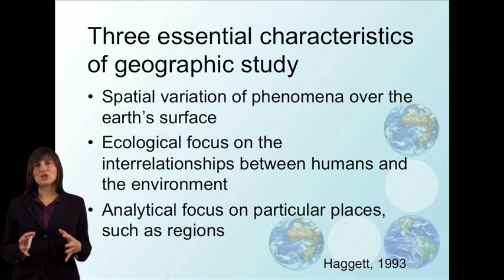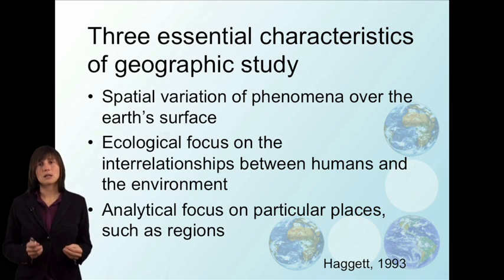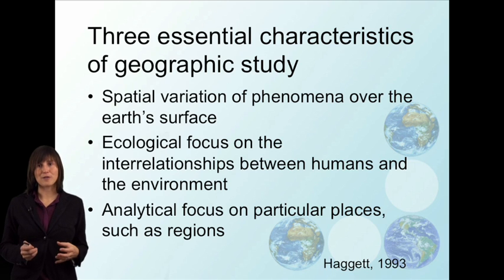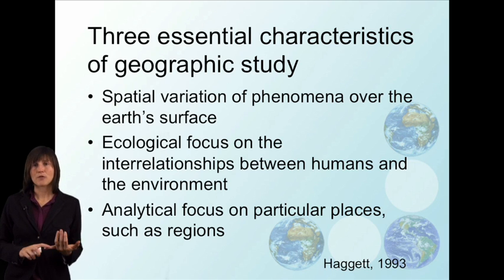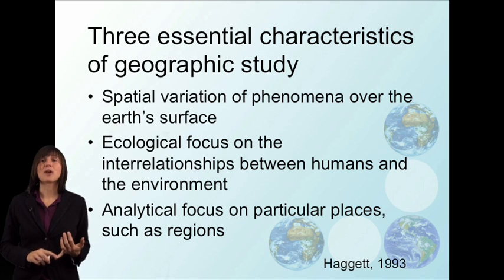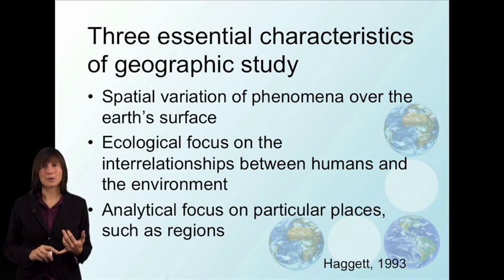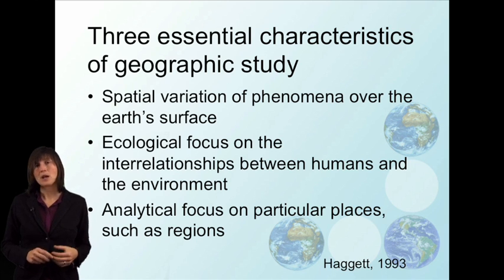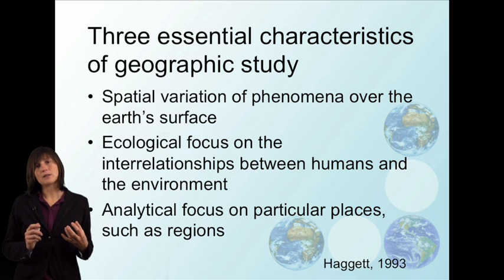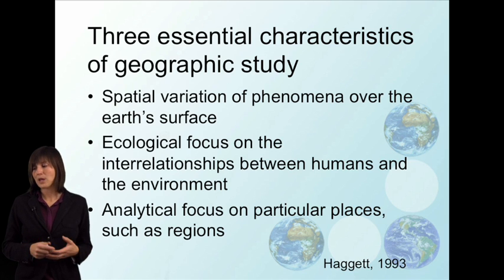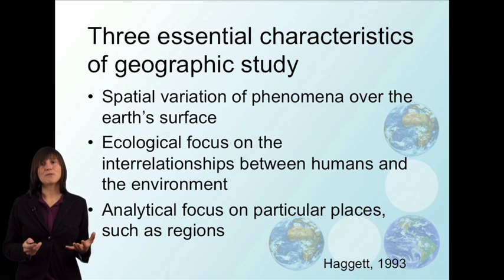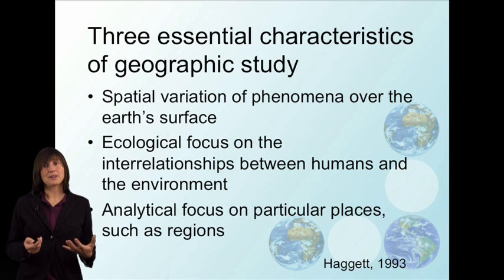When we look at geography, there are three key elements that are foundational to understanding it. First is the spatial variation of phenomena over the surface of the earth — again, where things are located. A second focus is on the ecological relationships between humans and the environment. And a third is a focus on particular places, often talked about through the idea of regions, which we'll focus on a lot since this is world regional geography.